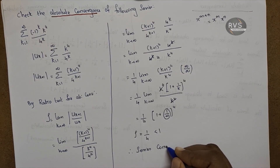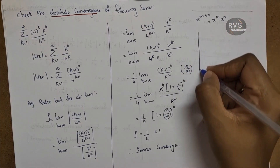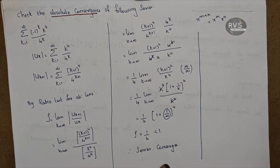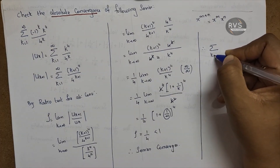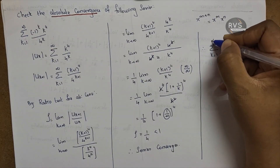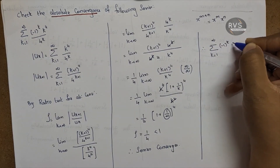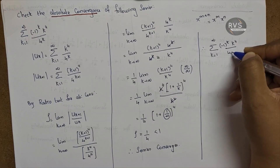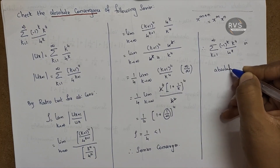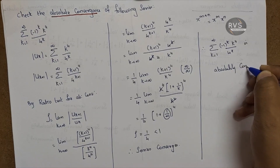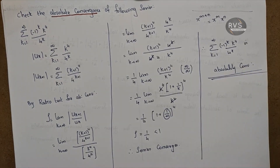By the ratio test, the series of absolute values converges. Therefore, the given series — summation k equals 1 to infinity of minus 1 raised to k times k raised to 4 over 4 raised to k — is absolutely convergent.